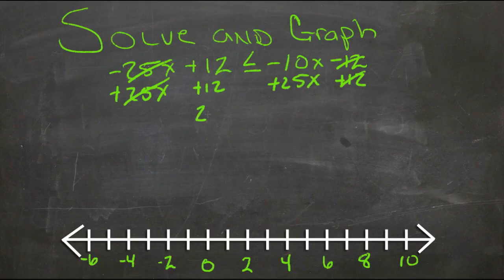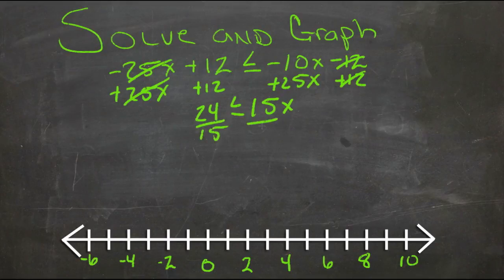So then we'll have 24 is less than or equal to 15x, and then we'll divide both sides by 15. 15s will cancel.